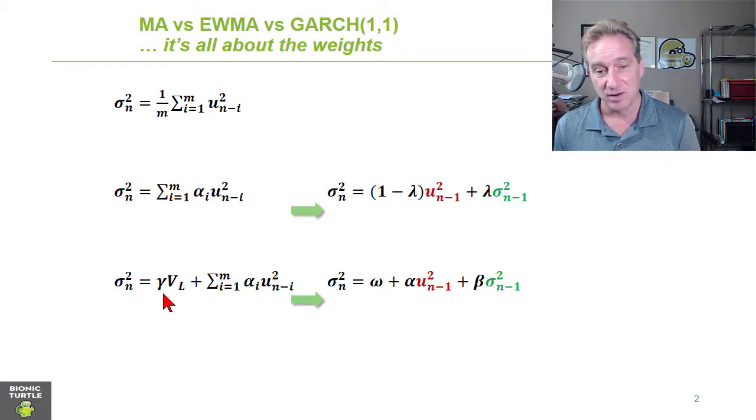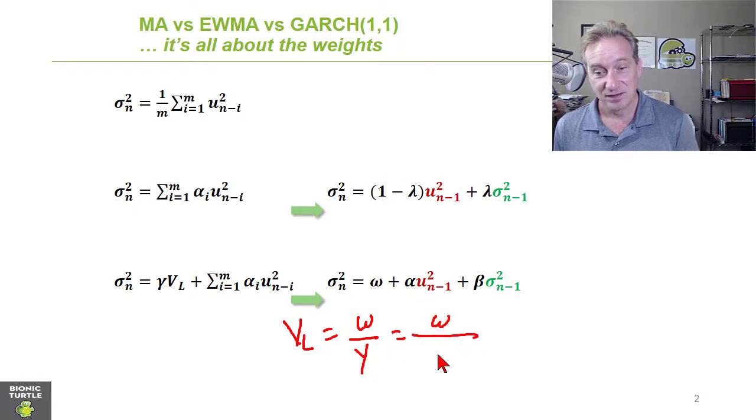And so because of that necessary equality or constraint, if we take the fact that omega equals the product of gamma and the long-run variance, then a common thing we can do is solve for the long-run variance. So obviously you can see here is omega divided by gamma. But we just said that the weights need to sum to 1. So that means the long-run or unconditional variance embedded in this GARCH is the omega term divided by 1 minus alpha minus beta.